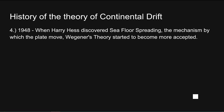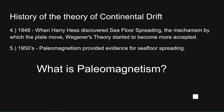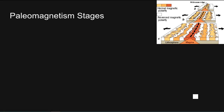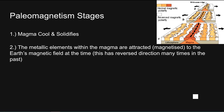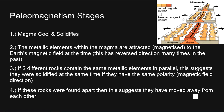In 1948, when Harry Hess discovered seafloor spreading — the mechanism by which plates move — Wegener's theory started to become more accepted. In the 1950s, paleomagnetism provided evidence for seafloor spreading. Magma cools and solidifies, and the metallic elements within the magma are magnetised to the Earth's magnetic field at the time, which has reversed direction many times in the past. If two different rocks contain the same metallic elements in parallel with the same polarity or magnetic field direction, this suggests they solidified at the same time. If these rocks are found apart, this suggests they have moved away from each other through seafloor spreading.